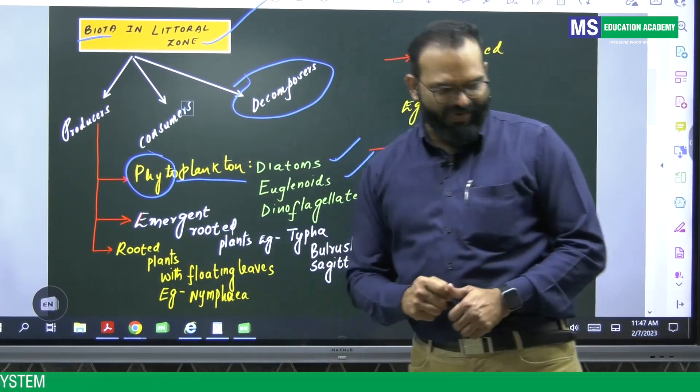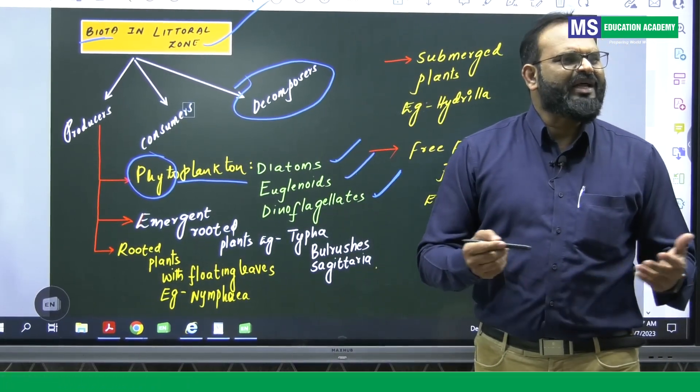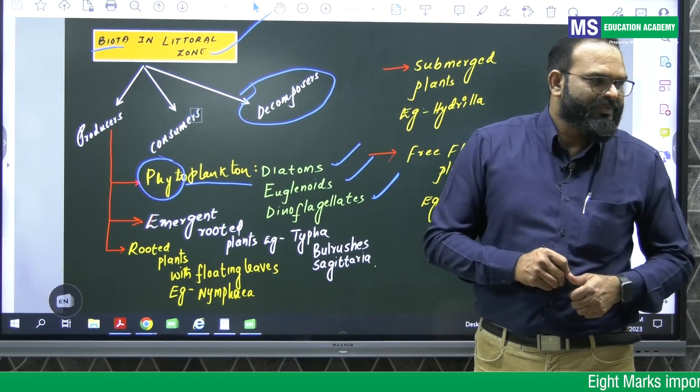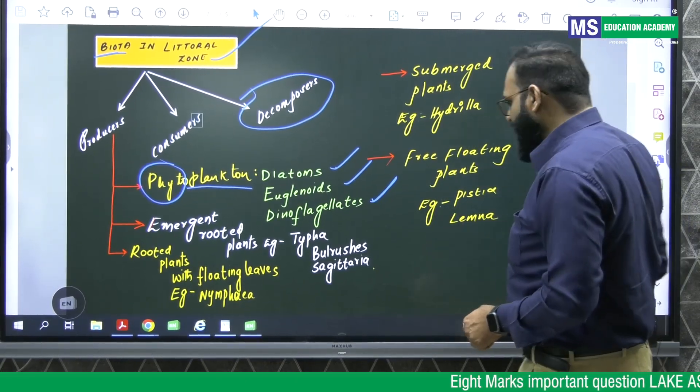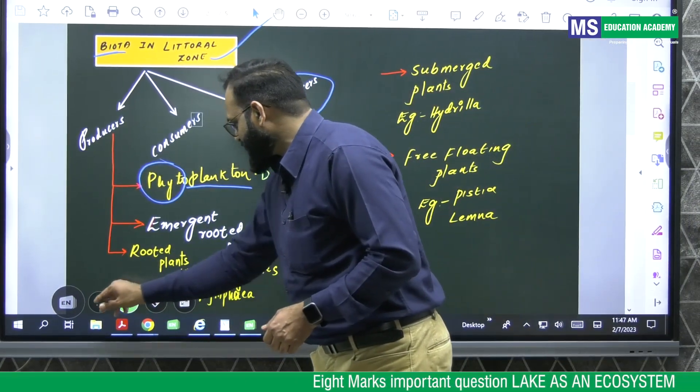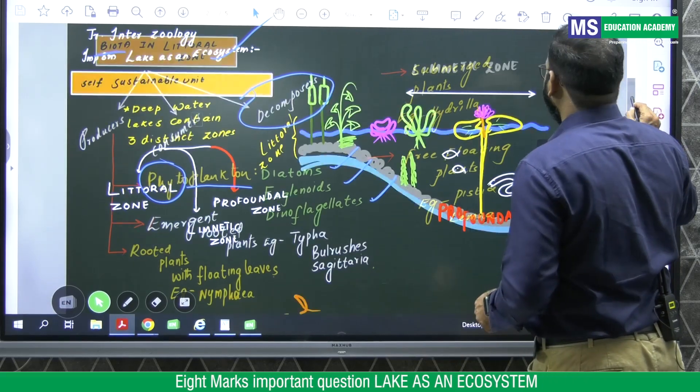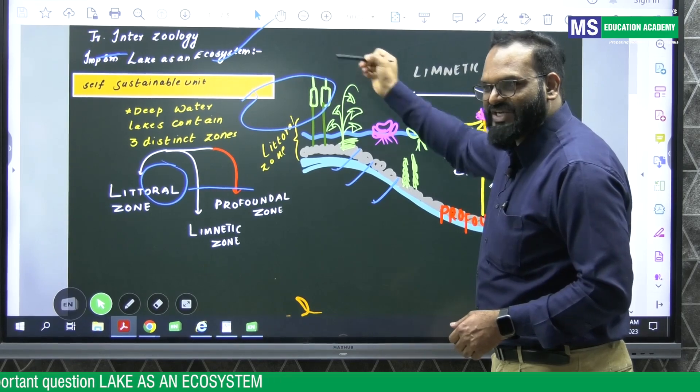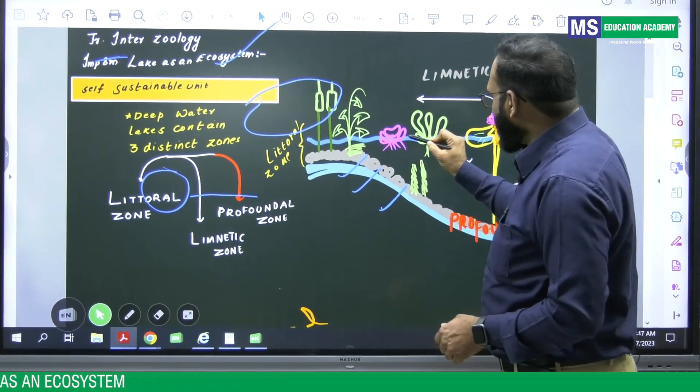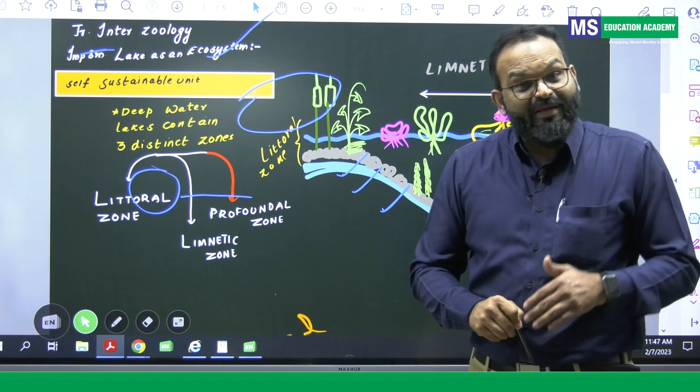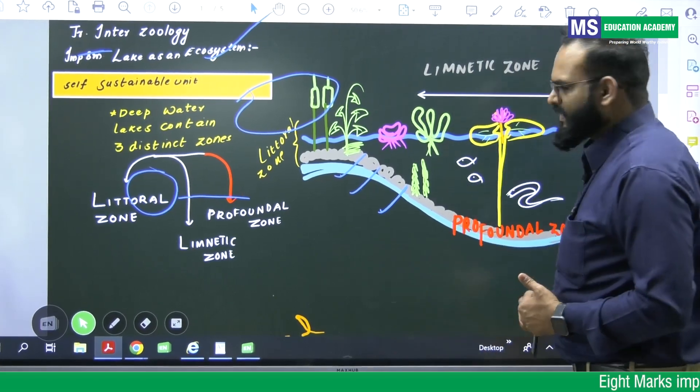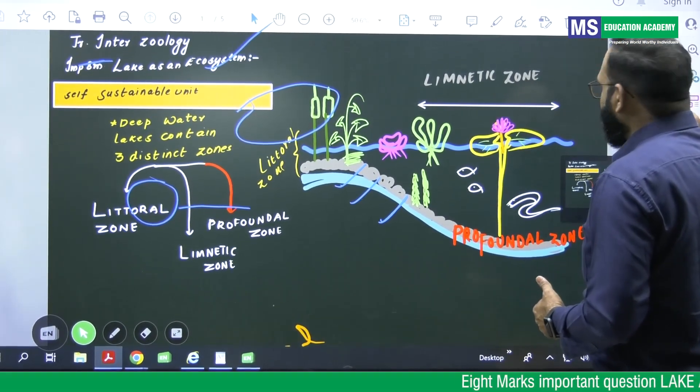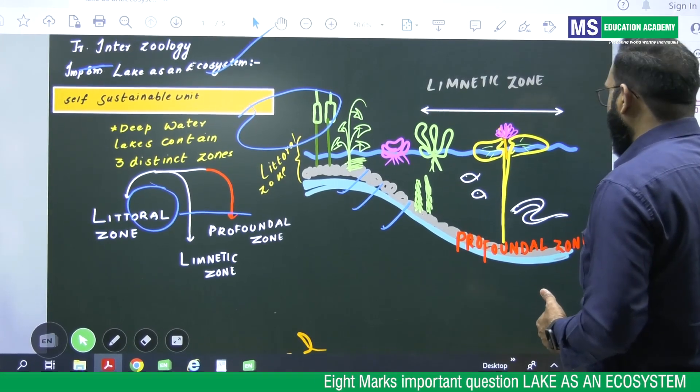Second category, hydrophytes. Hydrophytes are aquatic plants. And these aquatic plants, they may be emergent plants, they may be submergent plants and they may be free-floating plants. So this type of terminology you have to write students.